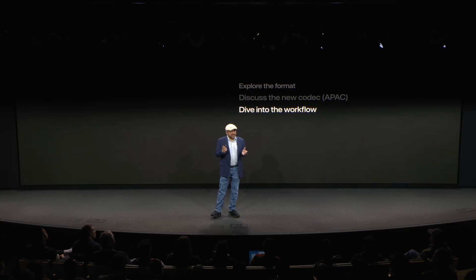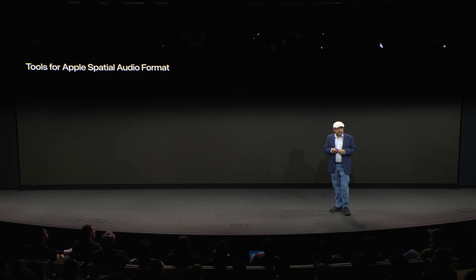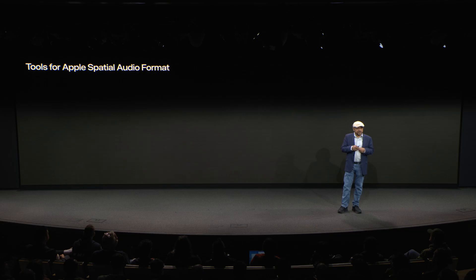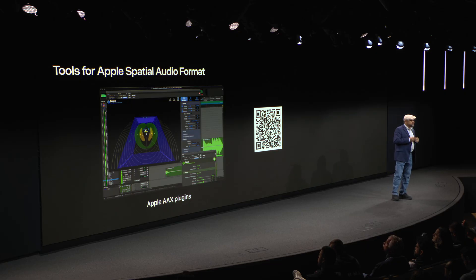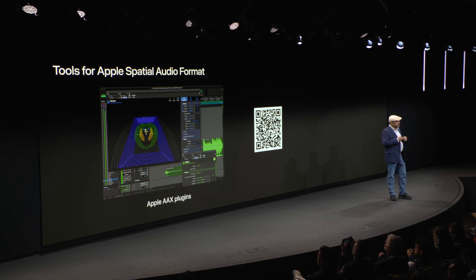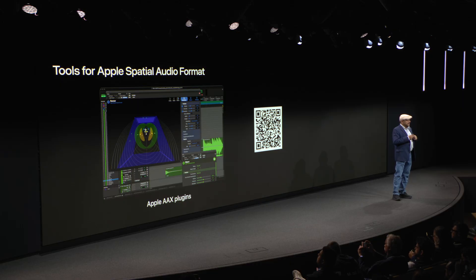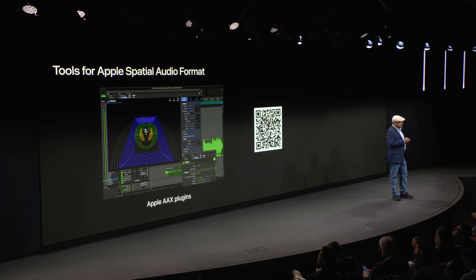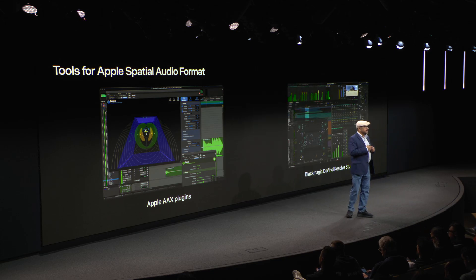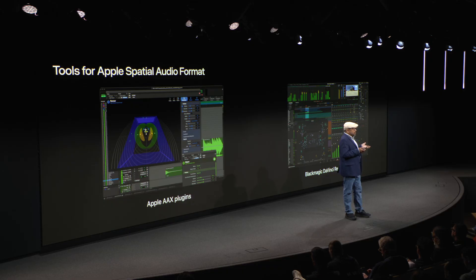So how can you take advantage of the new format and codec? Let's go over the end-to-end workflow. To start, let's look at the tools to create ASAF content. Currently there are two: the just-released Apple AAX plugins for Pro Tools, called the ASAF Production Suite — available for free from Apple's developer portal at developer.apple.com/download, search for spatial audio. And then there is Blackmagic's Fairlight and DaVinci Resolve Studio. Both allow creation of up to 7th-order ambisonics in addition to hundreds of ASAF objects and metadata.